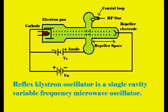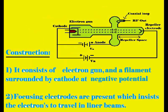The reflex klystron oscillator is a single-cavity variable-frequency microwave oscillator, whereas klystron amplifiers are multi-cavity devices — they have more than one cavity for microwave oscillations. Let us now see the constructional features of the reflex klystron oscillator.